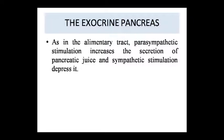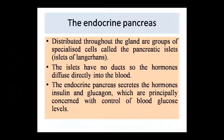The endocrine function is performed by specialized cells called the pancreatic islets, which we call the islets of Langerhans. These cells are not connected to ducts, so this is an endocrine gland. The endocrine pancreas secretes hormones like insulin and glucagon, which mainly control the blood glucose level.